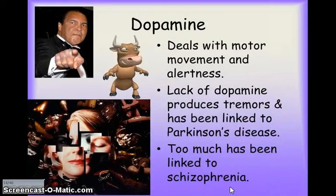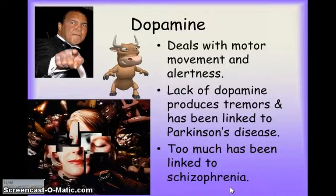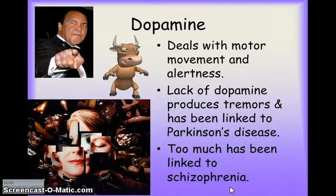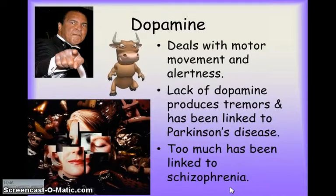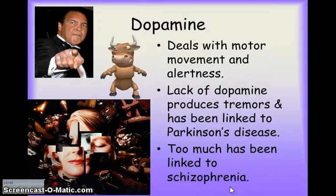Dopamine is another very commonly discussed neurotransmitter. It has to do with movement and alertness. Lack of dopamine produces tremors and has been linked to Parkinson's disease, where people have difficulty with body movements — Muhammad Ali is a famous case. Too much dopamine can lead to schizophrenia; most people with schizophrenia have too much dopamine in certain brain areas, contributing to hallucinations and delusions.